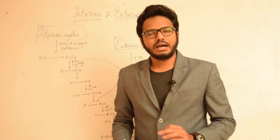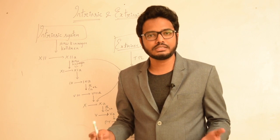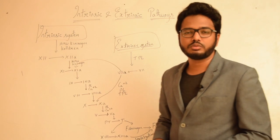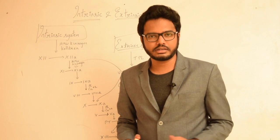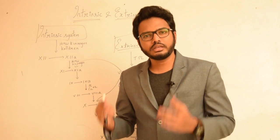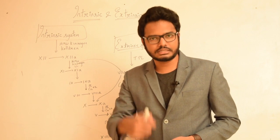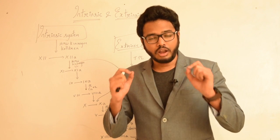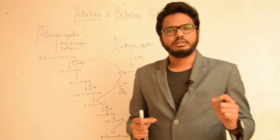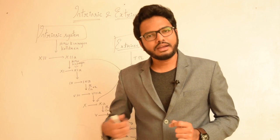An important clinical consideration: in cirrhosis of the liver, there can be absence of proteins, especially prothrombin and fibrinogen. Also, as mentioned earlier, endothelial injury can activate both intrinsic and extrinsic pathways. Now, the most important aspect is that there is a simplified way to remember this entire coagulation cascade, which we'll discuss now.